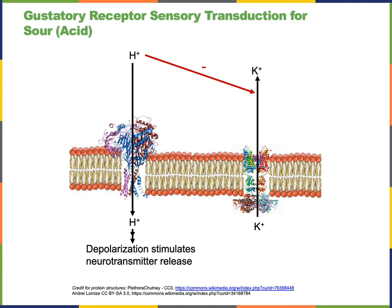The transduction mechanism for the taste of sour involves hydrogen ions entering the gustatory receptor cell through a cation channel, while simultaneously hydrogen ions inhibit the efflux of potassium through a potassium channel. This leads to a net influx of cations causing depolarization, which then stimulates the release of neurotransmitters onto the dendrites of the afferent neurons.